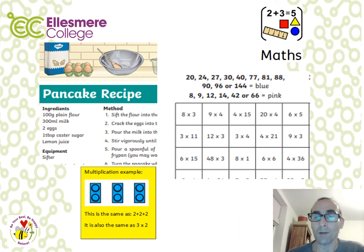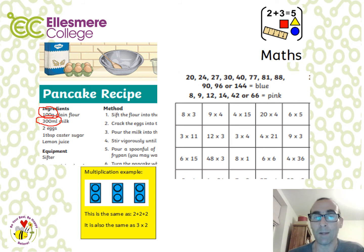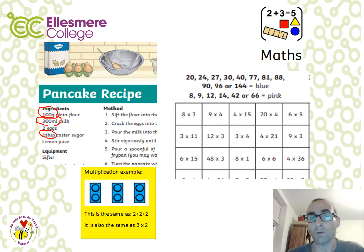We've spent a lot of the pack looking at measuring — whether capacity or weight. So in lesson seven we're going to do a practical example of using both weight and capacity in baking and making something in the kitchen. In this pancake recipe, you'll need to be weighing 100 grams and finding 300 millilitres of milk. There are other measures as well, such as teaspoons and other forms of non-weight measurements.